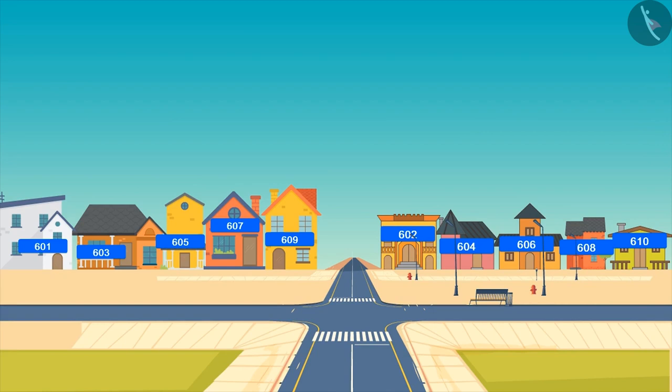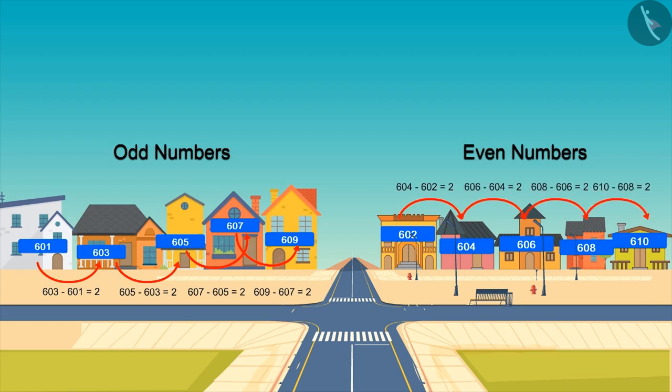Yes, the numbers in the houses on the left side are all odd numbers and the numbers on the houses on the right side are all even numbers. There's a difference of two between even and odd numbers and there is a difference of two between the numbers of these houses too. If we look at odd numbers, 603 minus 601 equals 2. Similarly in even numbers, 604 minus 602 equals 2. So you saw how we can see different patterns in numbers.